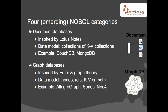Graph databases are, tongue-in-cheek, inspired by Euler, the 17th century mathematician who invented graph theory — so it's been around for a while. The data model is very equivalent to the document database, where documents were key-value pairs. Those are called nodes in the graph database model — nodes can contain key-value pairs. But on top of that, you have typed relationships. You can say this node is related to that node through a type like 'knows,' or 'owns,' or 'is contained in.' And you can also attach key-value pairs to the relationships as well. Examples here are AllegroGraph, Sones, and Neo4j.